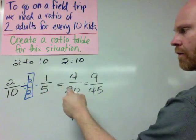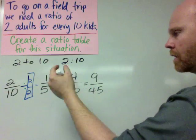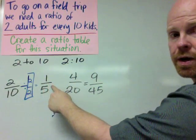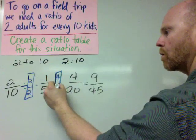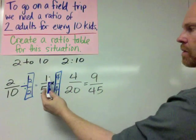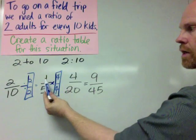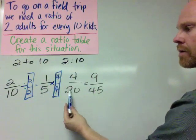And now how do we go from 1 to 5 to 4 to 20? Well, we could take the ratio 1 to 5. We can multiply by 1. But that 1 is going to look like 4 over 4. And all of a sudden, we get the ratio 4 to 20, because 1 times 4 is 4, 5 times 4 is 20.